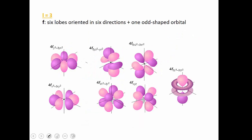The last subshell we're going to talk about is the F subshell. It has an L equals 3 value — so when you see a set of quantum numbers with L equals 3, that means it's in an F subshell. There are seven orbitals in an F subshell. The shapes get very complex, going from simple to more complex as we increase our L value. Each of those orbitals holds two electrons, giving the F subshell a capacity of 14 electrons.